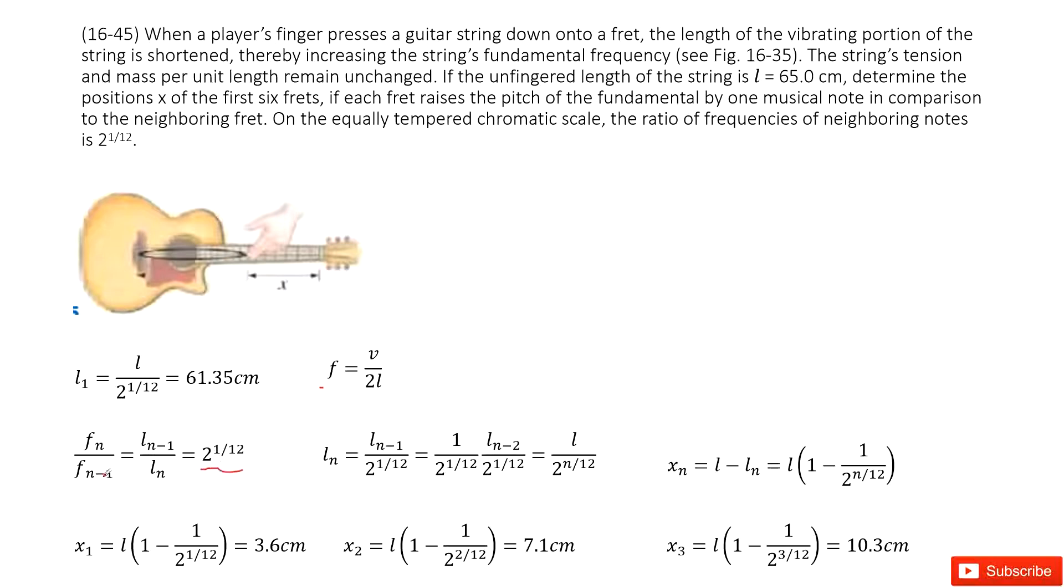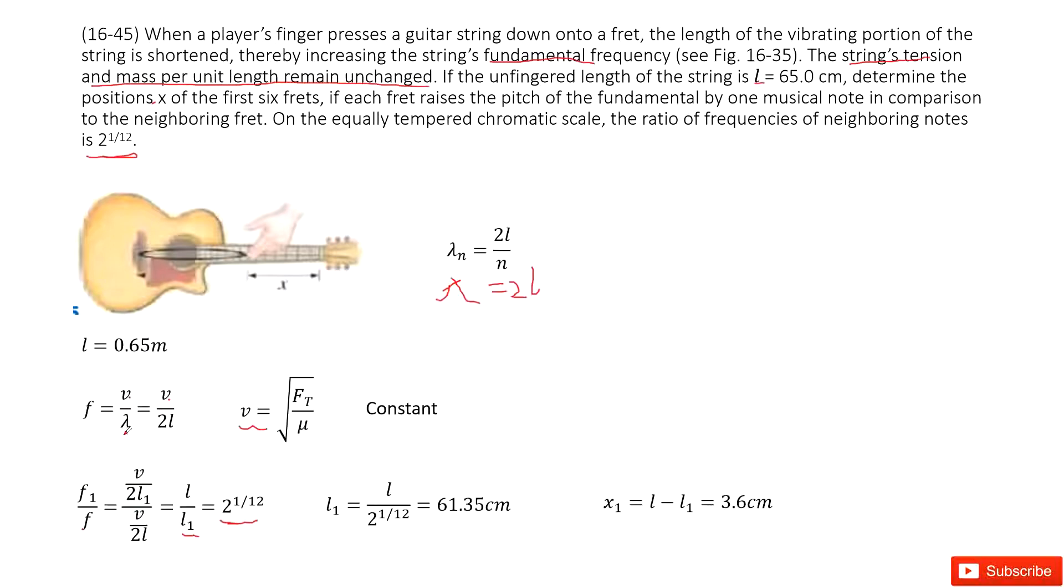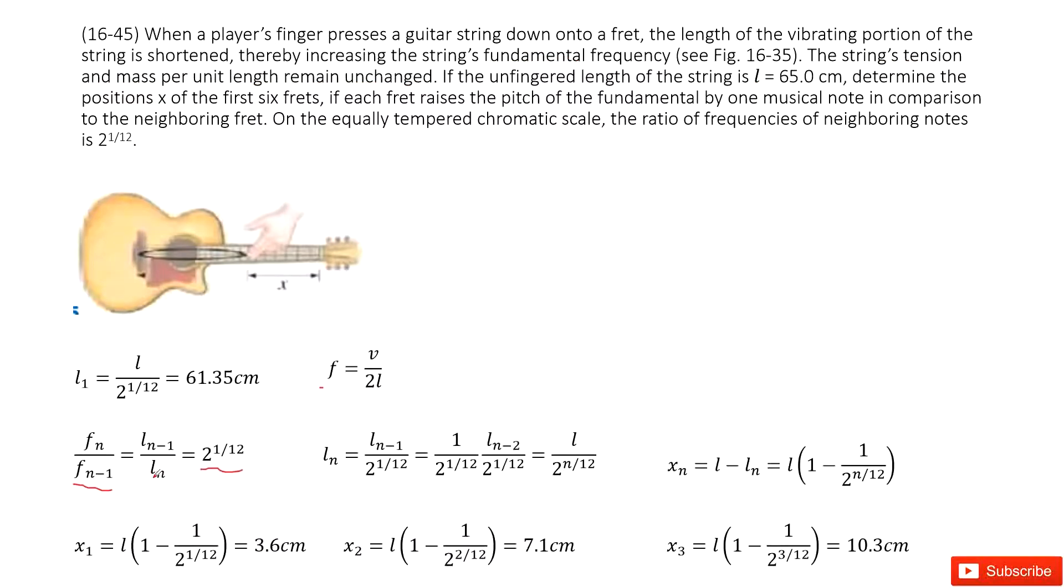So we write f_n over f_(n-1) is this number. Then how can we write it? We can see the v is constant. f times L is constant. So we can write f_n over f_(n-1) is this L_(n-1) divided by L_n. Just exactly the same as what we did. Now you can see we can write it as this one. L_n is L_(n-1) times this ratio.